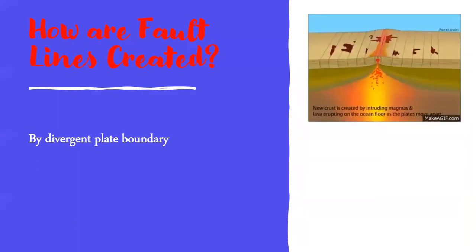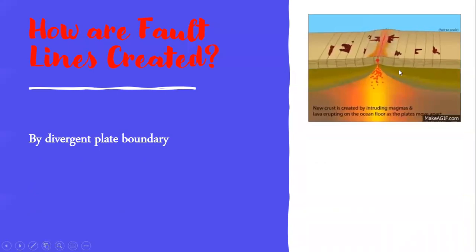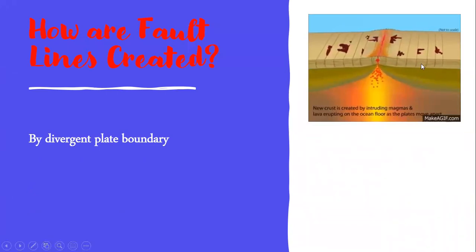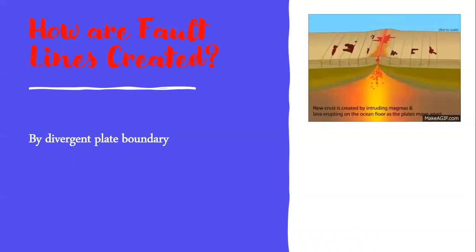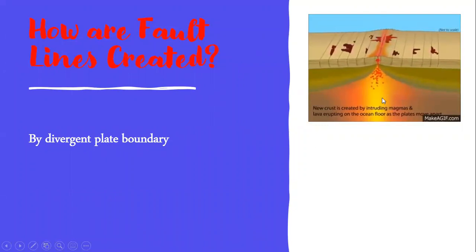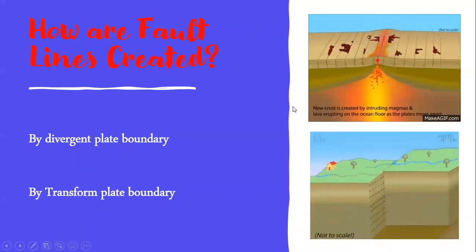How are these fault lines created? They are created by the divergent plate boundary. When two plates move far away from each other and split apart, a fault line is created because of the tension inside the crust. So whenever there is a divergent plate boundary, we are going to experience fault lines. They also occur at transform plate boundaries.